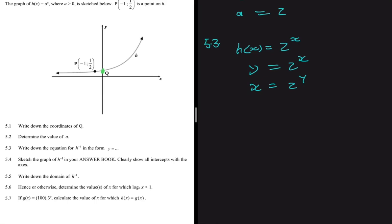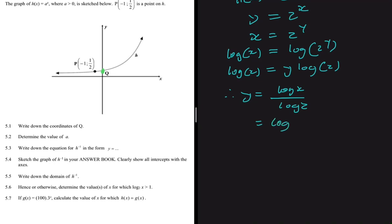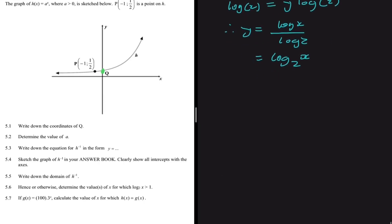Now we have y as an exponent, so we introduce log on both sides. Log of x equals log of two to the power y, and we can bring y down to get log of x equals y times log of two. Dividing both sides by log of two gives y equals log of x divided by log of two, which equals log base two of x. That is our inverse.